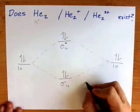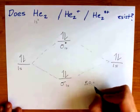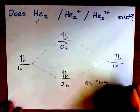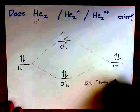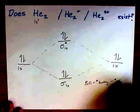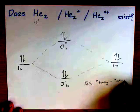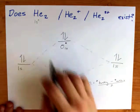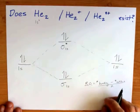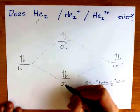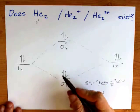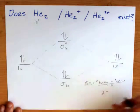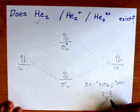The bond order is, and always is, the number of electrons in bonding orbitals minus the number of electrons in anti-bonding orbitals divided by two. So for He₂ we have two electrons in bonding orbitals. This is the only bonding orbital we have and there are two electrons in it. There are two electrons in the anti-bonding orbitals and we divide that by two.